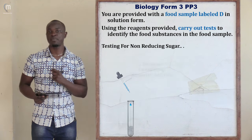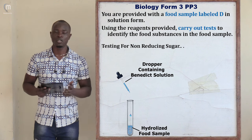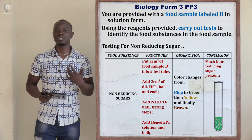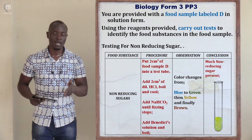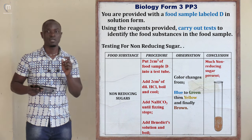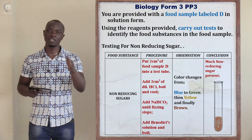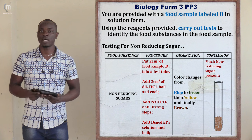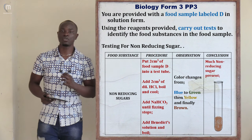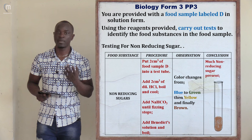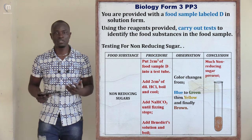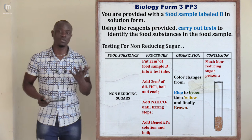After fizzing stops, add Benedict's solution to the contents of the test tube and observe. In this case, the color of Benedict's solution changed from blue to green, then to yellow, and finally settled at brown. The conclusion is that non-reducing sugar is present. Note: it is wrong to say 'non-reducing sugars are present' — the correct phrasing is 'non-reducing sugar present.'